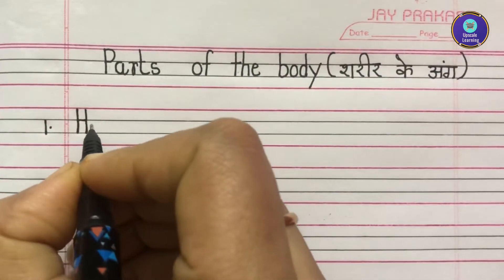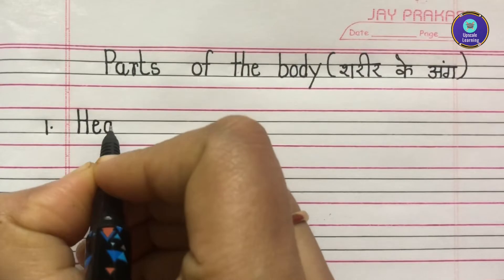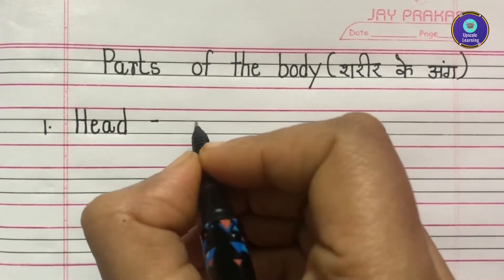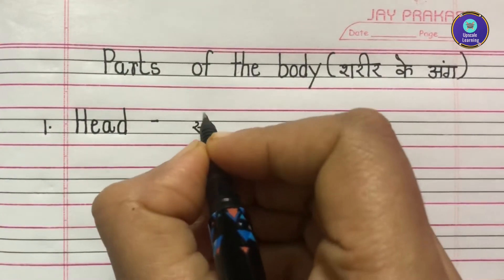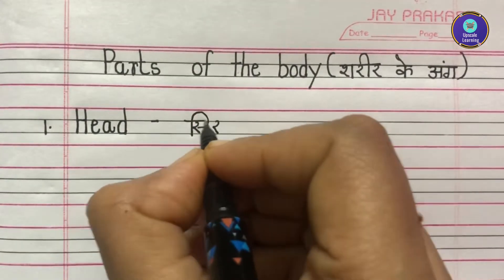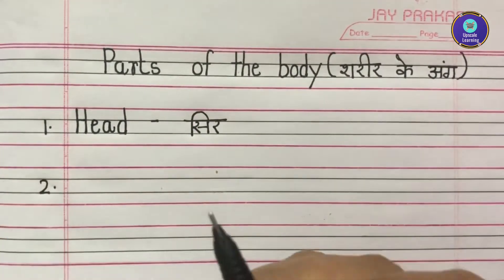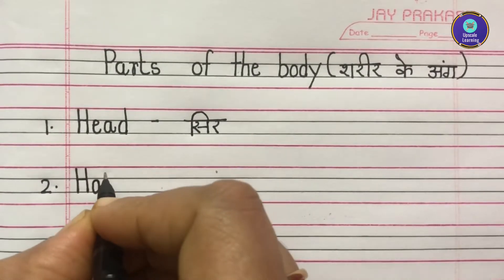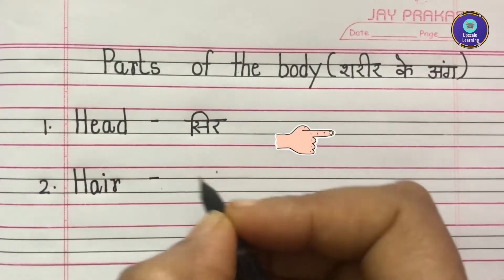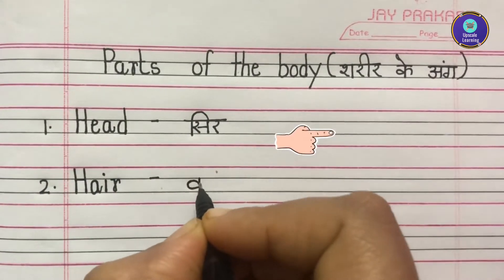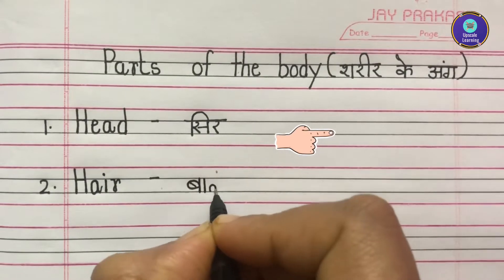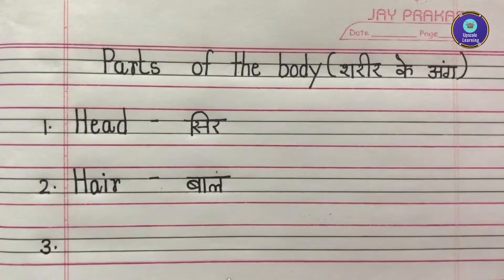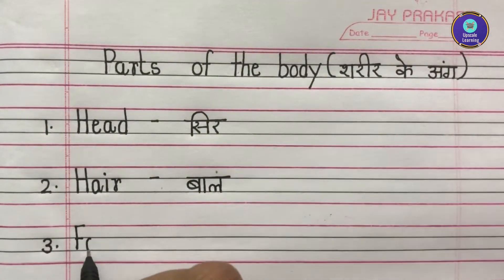First one is Head, H-E-A-D. Head ko hum Hindi mein Sirr kehtae hain. Second one is Hair, H-A-I-R. Hair ko hum Hindi mein Baal kehtae hain.